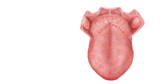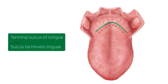The lingual papillae are located on the dorsum or the upper surface of the tongue which we can see here. They are only located on the pre-sulcal part of the tongue, which is the part of the tongue anterior to the sulcus terminalis. The sulcus terminalis is this v-shaped groove highlighted in green and it separates the anterior two-thirds of the tongue from the posterior third. The dorsum of the tongue is covered by mucosa and the lingual papillae are essentially projections of this mucosa that gives the tongue its rough surface.